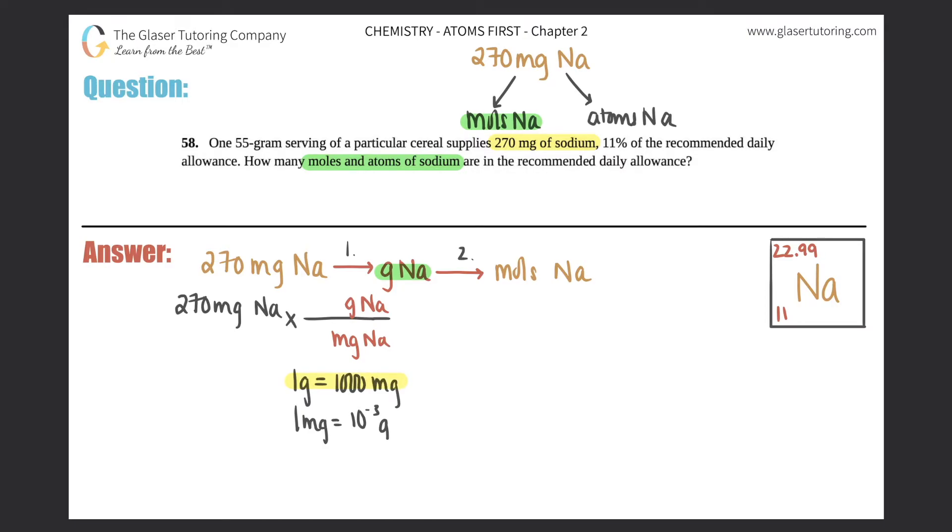So I'm just going to say that one gram equals a thousand milligrams and that will cancel out the milligram unit. Now we're left with grams.